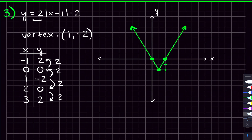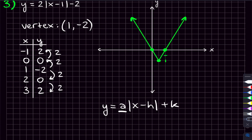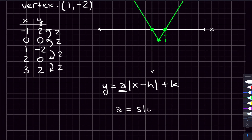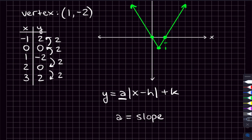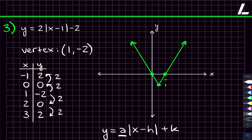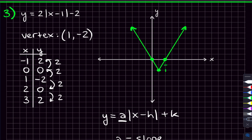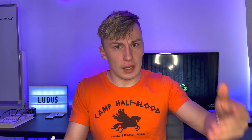The main form for absolute value functions is y = a|x - h| + k. There are three numbers to figure out. The number out front, a, is your slope. The h and k give your vertex at (h, k). The x coordinate of the vertex is the opposite of the number inside — so for x - 1, h = 1. The k stays the same sign and gives the y coordinate of the vertex.